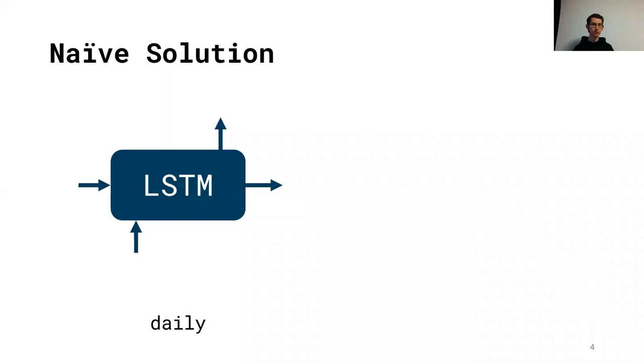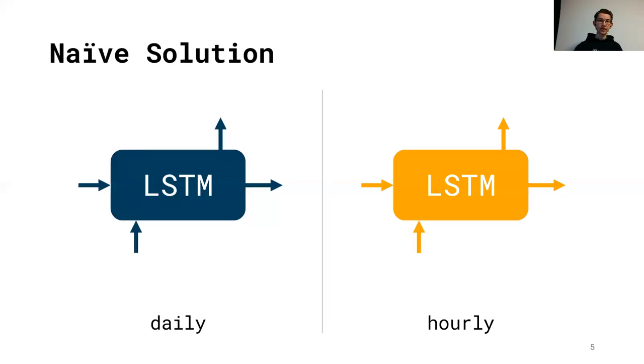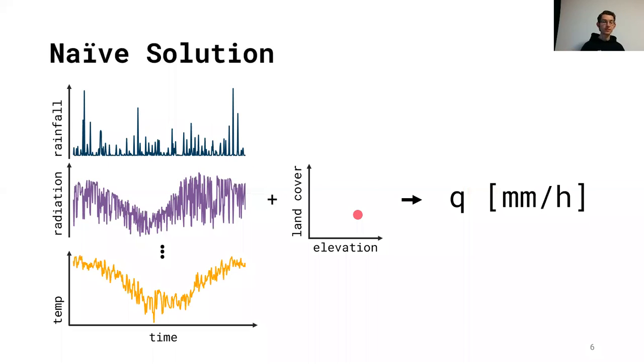Now the naive solution, of course, would be to say, well, we know that LSTMs work great for daily streamflow predictions. So let's just do the same thing at the hourly timescale and run an LSTM on hourly input data to generate hourly output data. But as I'll show in the next couple of slides, this is actually not such a great idea. The reason is grounded in part in the way that these models generate their predictions, these LSTMs.